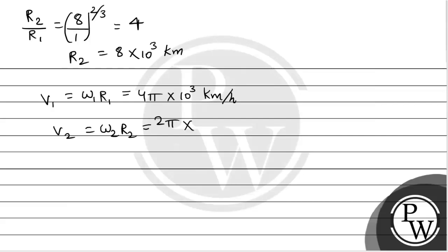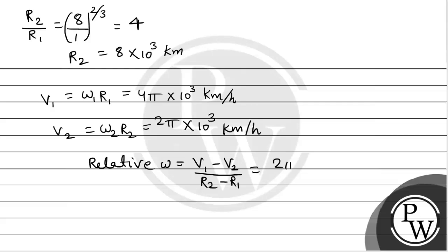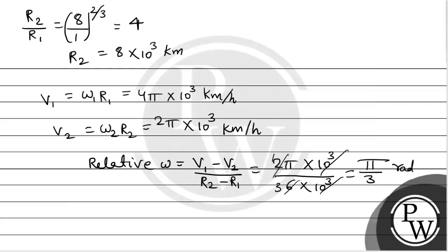The relative angular speed is equal to V1 minus V2 by R2 minus R1, which equals 2 pi into 10 to the power 3 divided by 6 into 10 to the power 3. From here, this equals pi by 3, which is 5 by 3 radian per hour — wait, pi by 3 radian per hour.